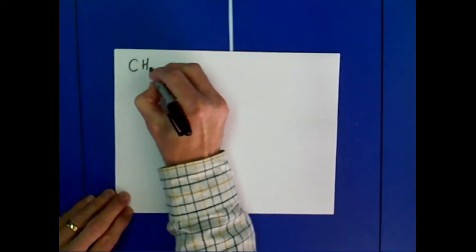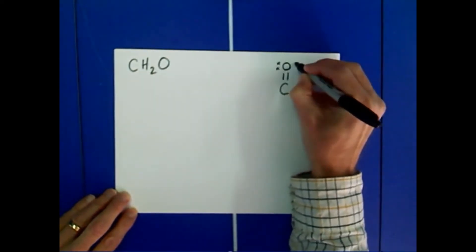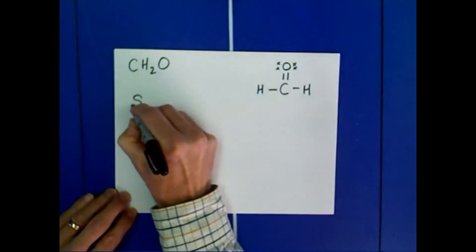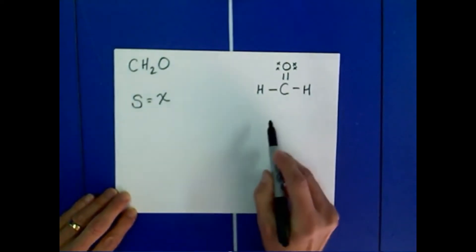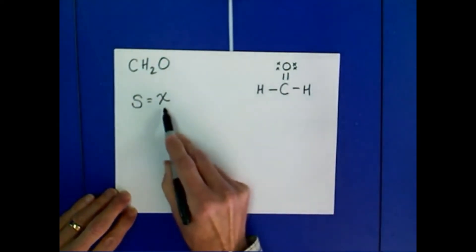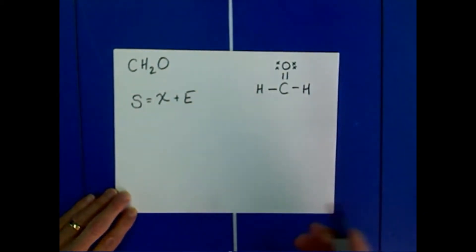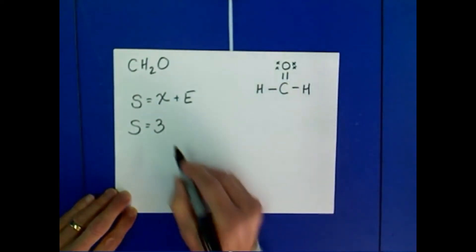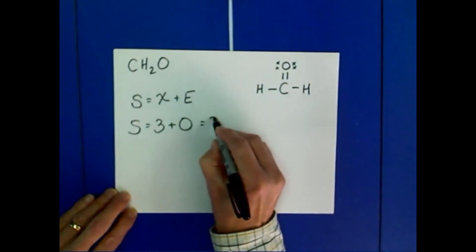The next molecule we're going to look at is formaldehyde, CH2O. Its Lewis structure looks like this. If we determine the steric number for our central carbon, that's the number of atoms attached to this central carbon — which stands for X — plus the number of lone pair electrons on our central carbon. We have three atoms attached to our central carbon: two hydrogens and an oxygen. Our central carbon has no lone pairs, for a steric number of 3.